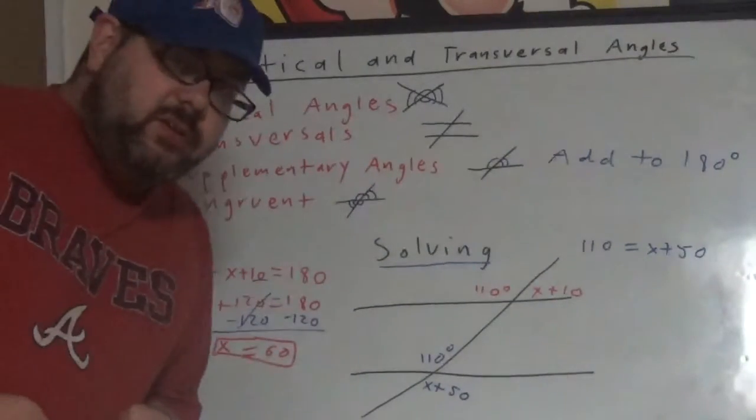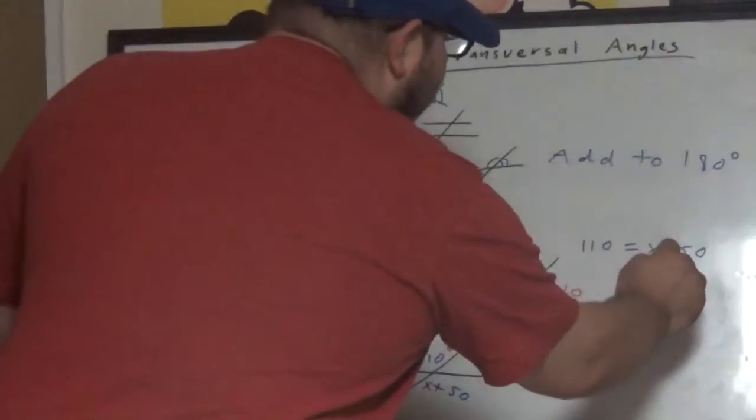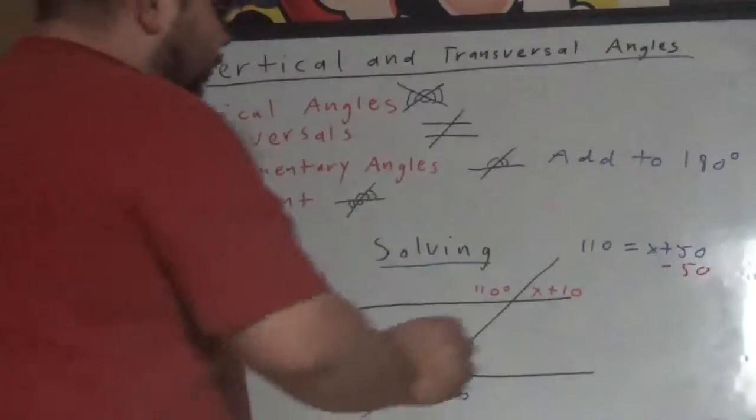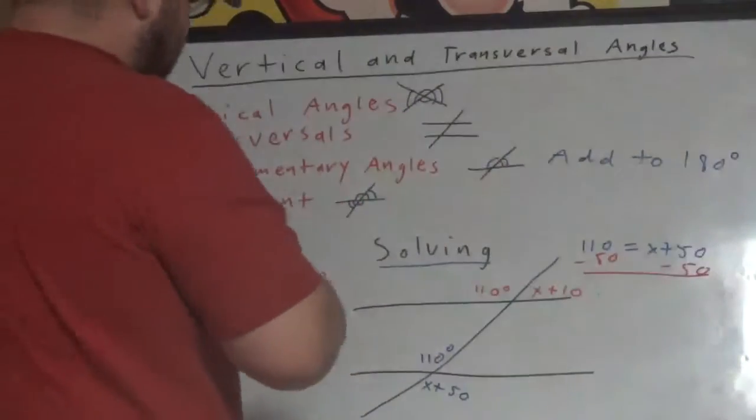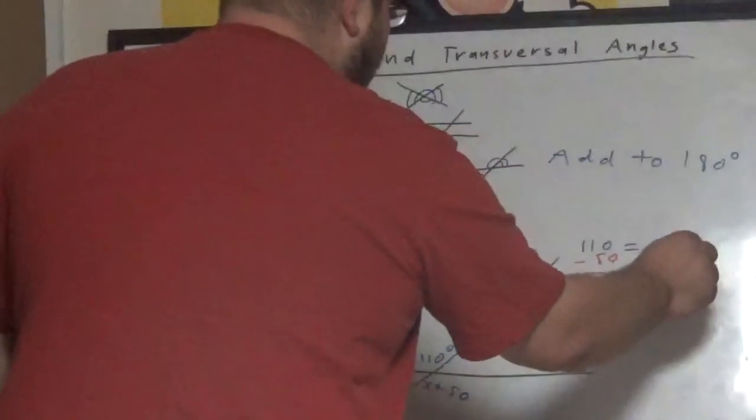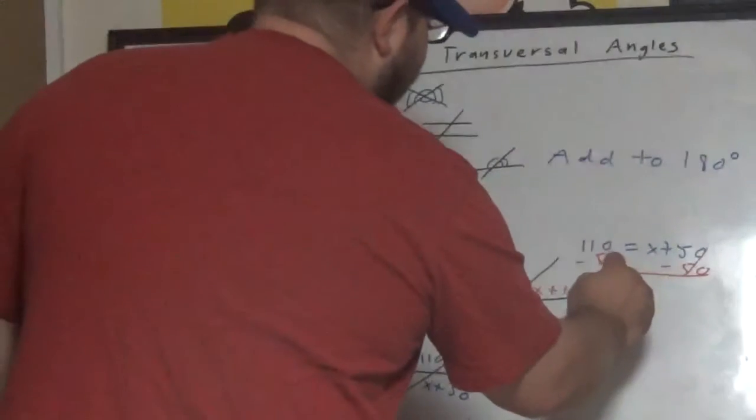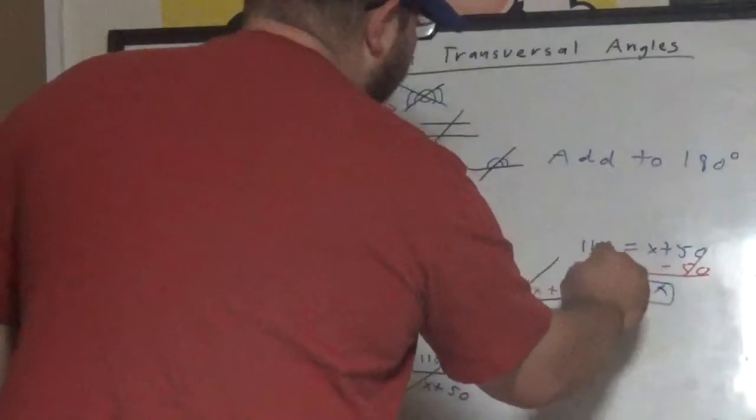I'm going to do 110 equals x plus 50. Well, this one's even easier. It's a one-step equation. No like terms. We have plus 50. So, we subtract 50 on each side. 110 minus 50 is 60. And that's it.